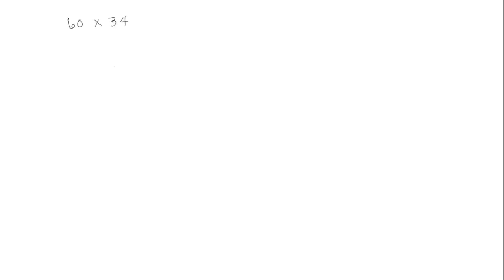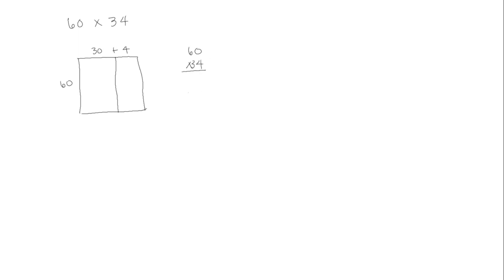Let's look at another problem: 60 times 34. Let's draw our area model. We keep 60 together because it's just 6 tens, and we're going to decompose 34 into 3 tens plus 4 ones. This time as we figure out the areas, we're going to record them as partial products in our standard algorithm form.